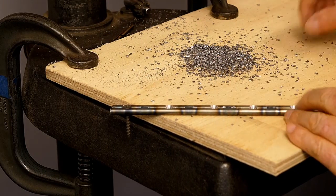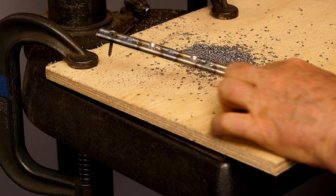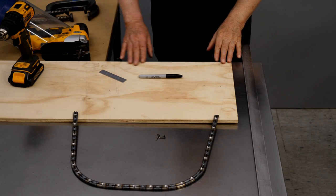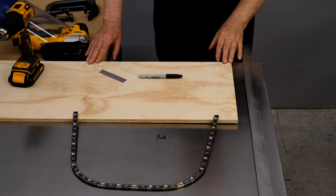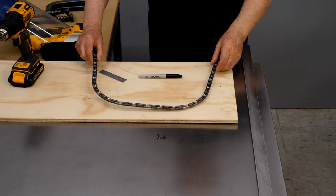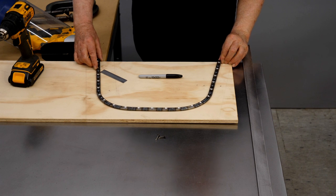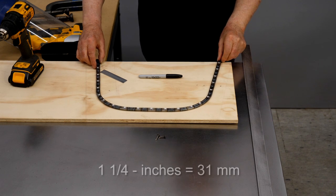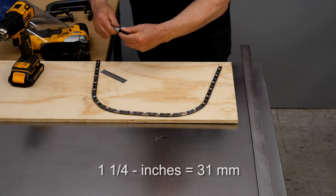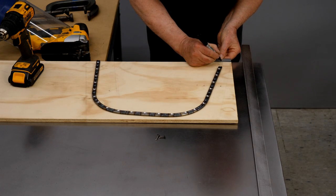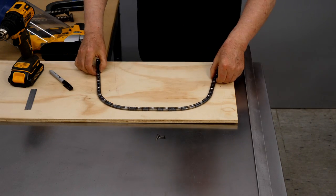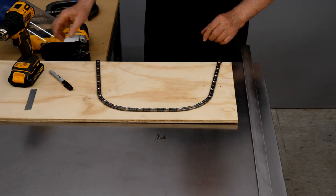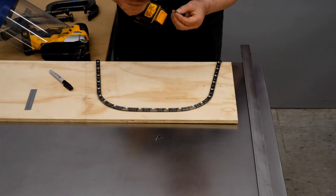That looks good. All of the holes are countersunk, and all of the screws fit flush. It's time to start working on the wooden part of the hammer form now. I'm going to position this steel bar an inch and a quarter away from this edge. So I'll put a small mark on the wood, add an inch and a quarter. Then I'll screw this steel part into place using drywall screws.